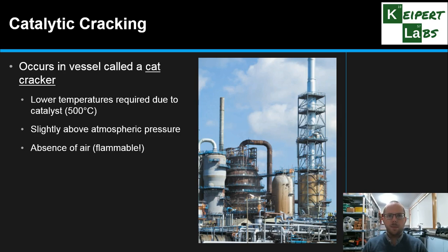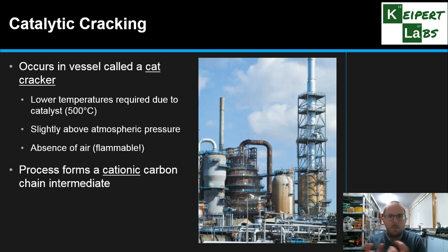Now the process here is slightly different because rather than forming a free radical with unpaired electrons, we actually form a positively charged carbon ion called a carbocation, which I know is a bit strange because it's unlike anything we've looked at before. But the way that the catalyst works facilitates the formation of this positive ion, which then allows our molecules to break apart. So it's a different mechanism that removes hydrogen atoms from the structure.